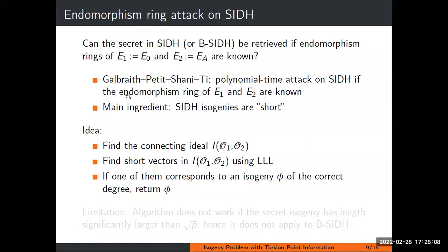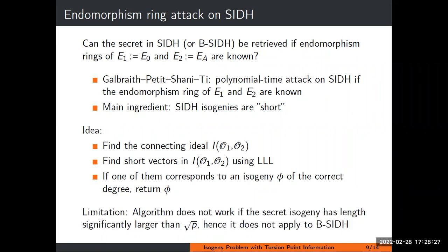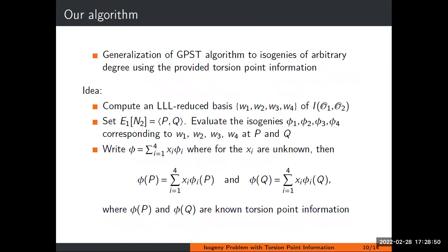How does this algorithm work? You compute a connecting ideal. You don't need to smooth it out, just any connecting ideal. Then you find the shortest vector in this connecting ideal using LLL, and with really large probability, this will be just the secret isogeny in SIDH. This uses the fact that usually, if you just have two curves, the smallest element in this lattice will have norm roughly square root of P, which is no longer the case in B-SIDH or other variants where the isogenies might be longer. So this attack doesn't apply to those variants.